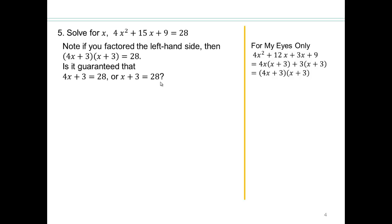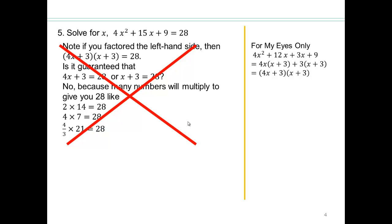Assuming you have come back, what's your answer? Well, you cannot be guaranteed that one of them has to be 28, because look, we can multiply 2 times 14 gives me 28, 4 times 7 gives me 28, 4/3 times 21 gives me 28. In fact, infinitely many combinations of numbers multiply together to give you 28. So we cannot say 4x + 3 equals one number or another number, because we don't know what two numbers multiplied to give you 28 here. So we cannot do this.